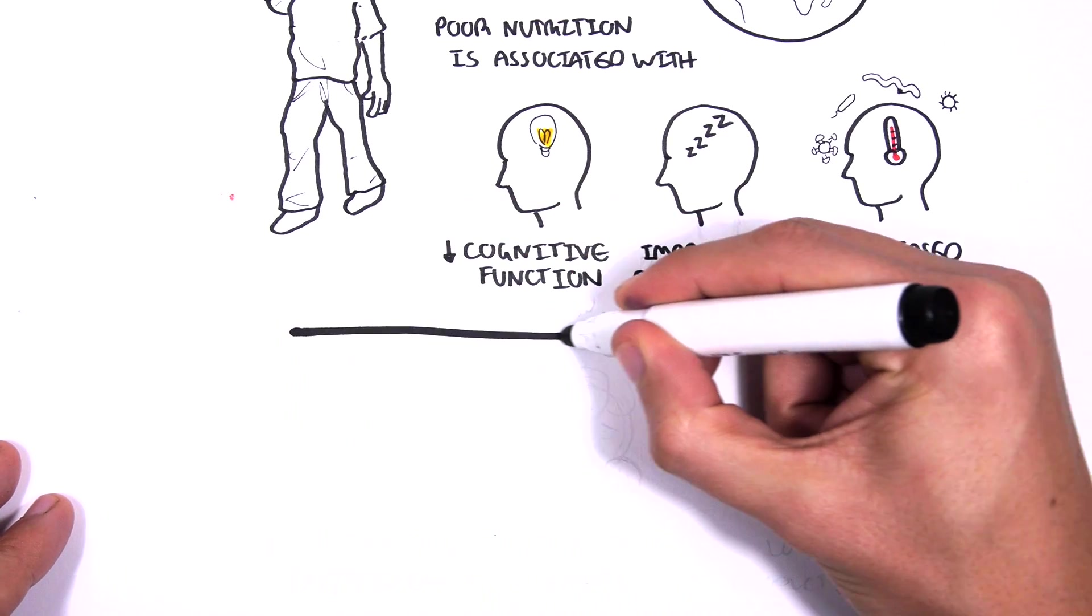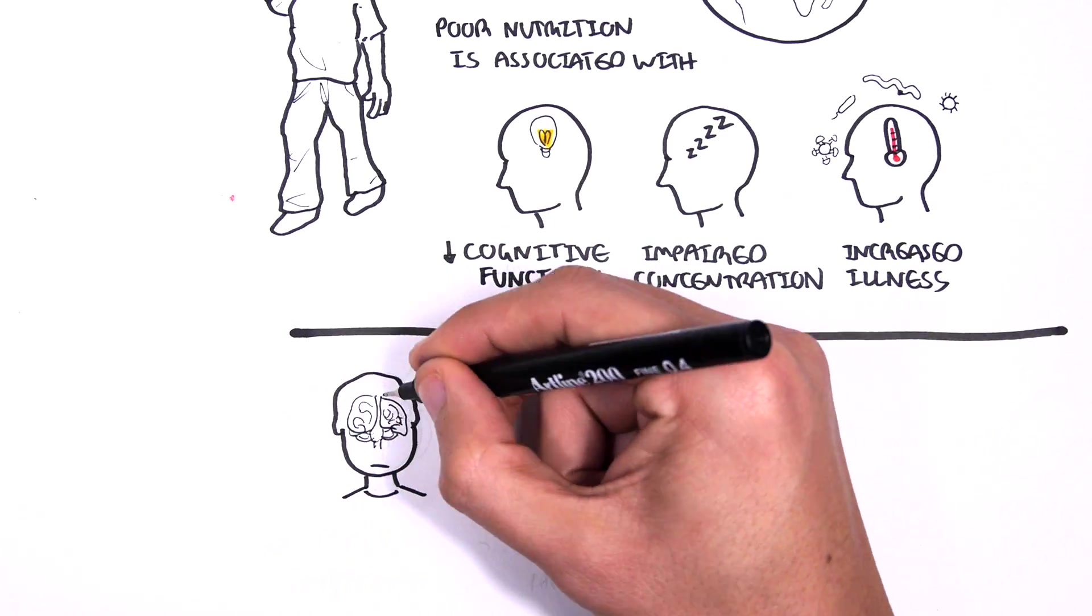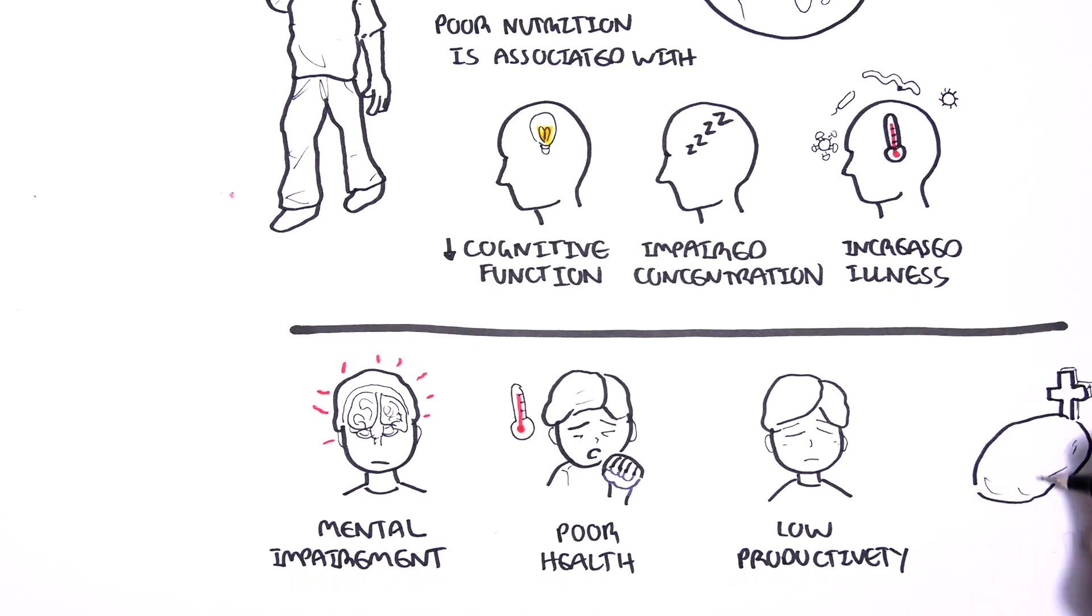If a child does not receive sufficient nutrition in the first 1,000 days of life, they are at risk of mental impairment, poor health, low productivity, and even death.